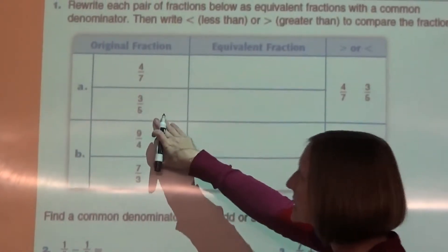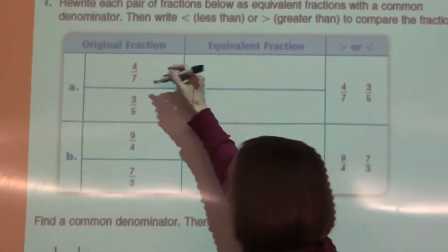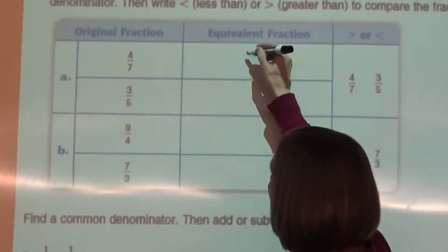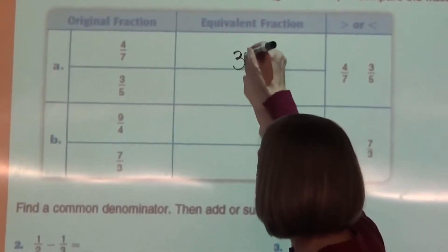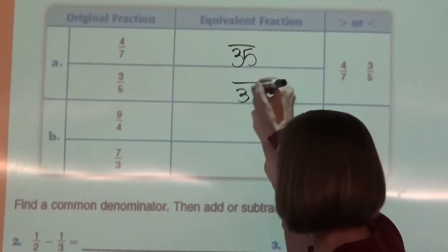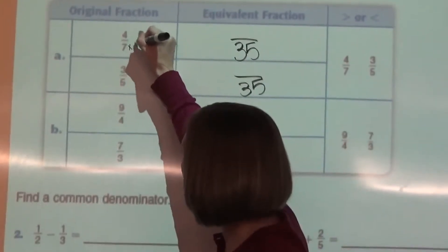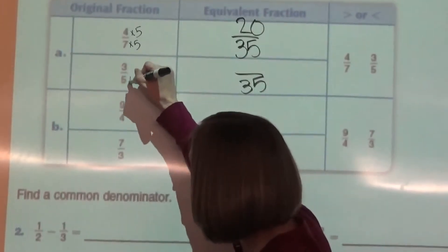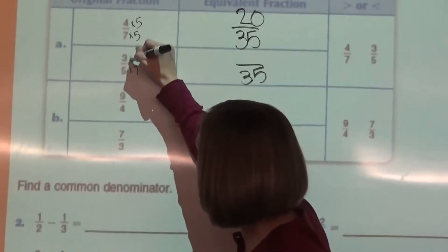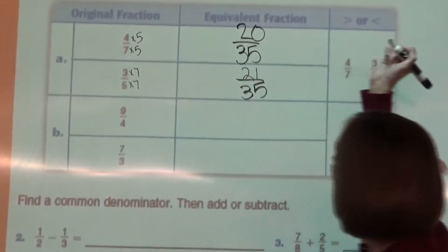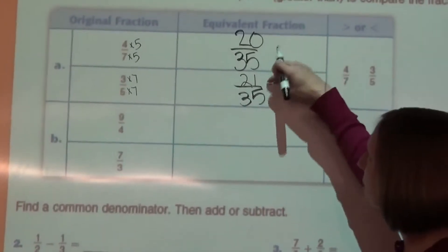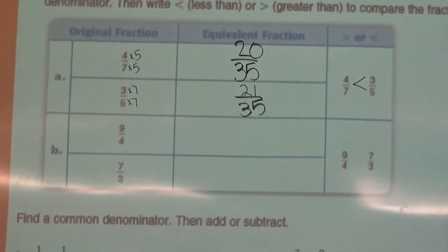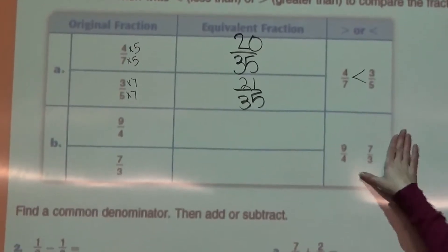Four sevenths and three fifths. One way that we can find a quick common denominator is multiplying. So I know seven times five is 35. If I multiply by five here, I have to do the same on the top. If I multiply by seven here, I do the same on the top. And I can see now by comparing my numerators that three fifths is larger, so four sevenths is less than. You'll continue to do that for part B.